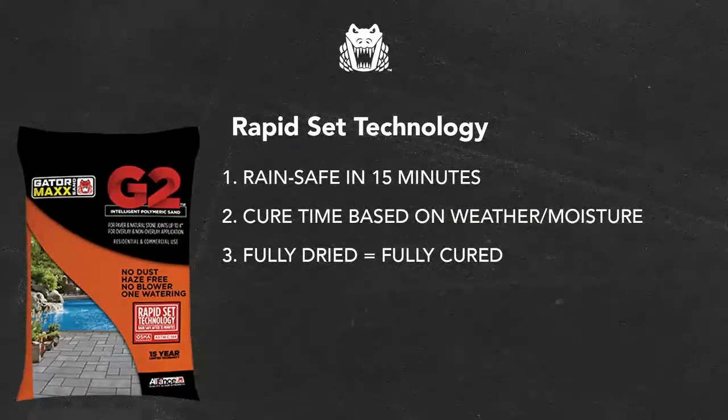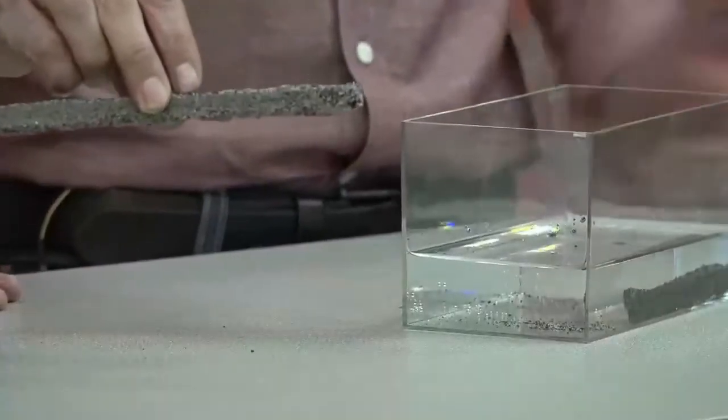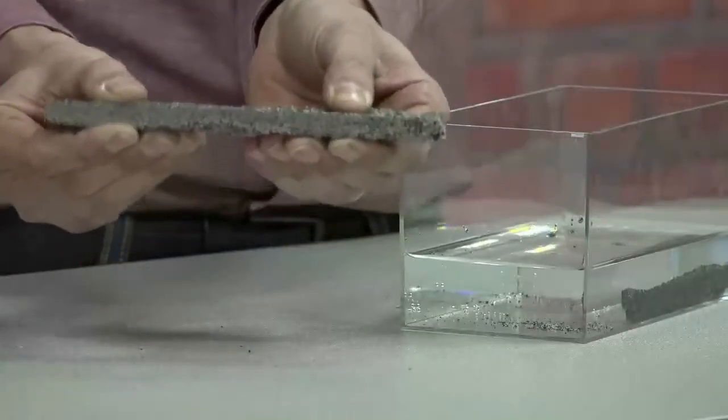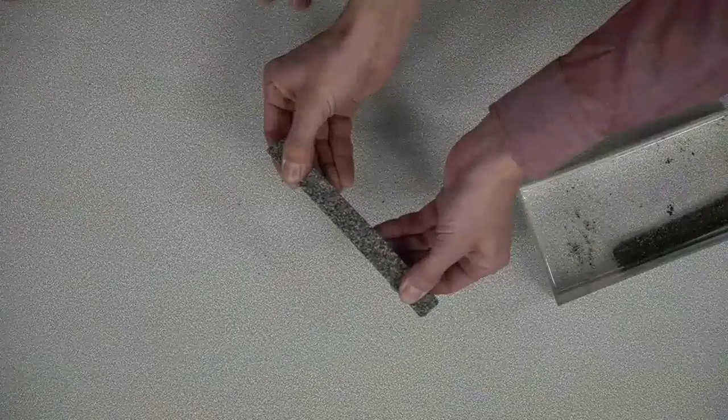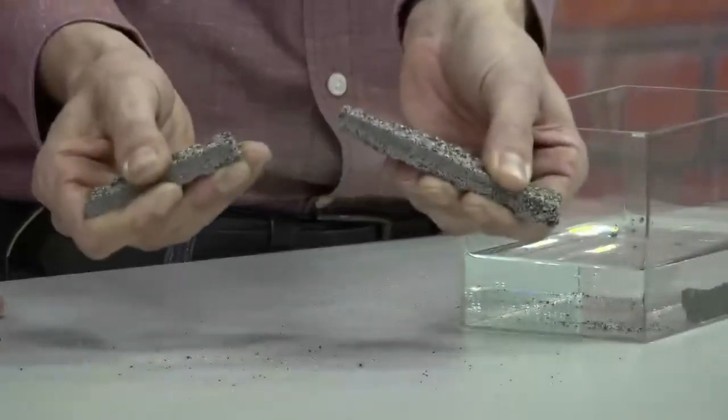We took apart a paver job yesterday and pulled material out of the joints. This piece has been sitting in water; this piece in my hand is dry, looks rigid, not moving or flexing. Polymeric sand once it dries is a pretty hard, stiff material — it doesn't bend but can snap and become fairly brittle. Under extreme force it cracks without bending.